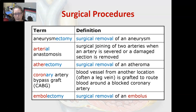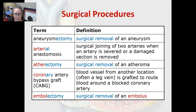An atherectomy is the surgical removal of an atheroma — a plaque inside of an artery. A coronary artery bypass graft, or CABG, is when a blood vessel from another location, often a leg vein but sometimes an arm vein, is grafted to route blood around a blocked coronary artery. This creates a bypass for circulation to go around the blockage.